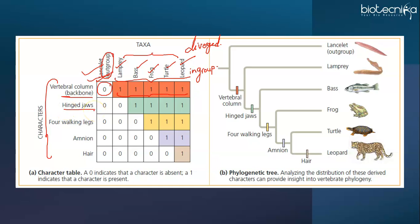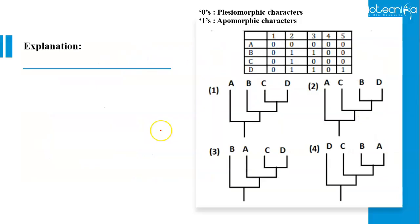For example, all of the vertebrates in the in-group have backbones. Only the lancelet, which is the out-group, does not have a backbone. This character backbone was present in the ancestral vertebrate but not in the out-group. Note that hinged jaws are a character absent in lamprey, but present in other members of the in-group. This character helps us to identify an early branch point in the vertebrate clade. Proceeding in this way, we can translate this data in our table of characters into a phylogenetic tree, as shown over here, that groups all the in-group taxa into a hierarchy based on their shared-derived characters. Four walking legs is a derived character for frog, turtle, leopard. Amnion for turtle and leopard. And hair is a derived character or you can say apomorphic character for leopard.